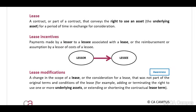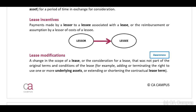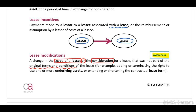A lease incentive will be payments made by the lessor to the lessee associated with that lease — it is important that you read the information carefully. Lease modifications, based on an awareness level but you still have to know this, will be when there is a change in the scope of the lease or the consideration for a lease that was not part of the original terms and conditions of the lease. When you look at the scope of the lease, this can be the square meters — if changes are made. Or regarding the consideration, if there are changes made in terms of the payments, you need to be able to identify this.